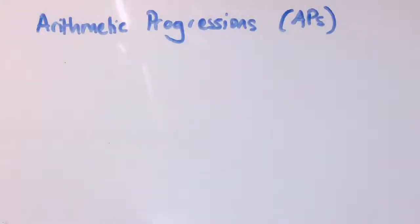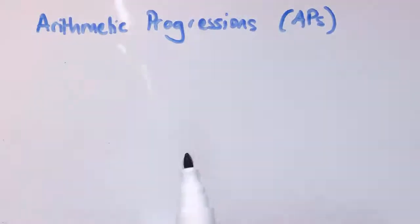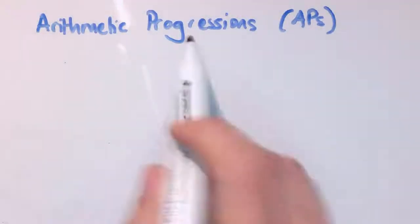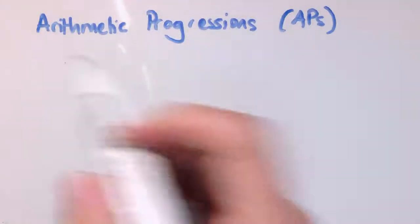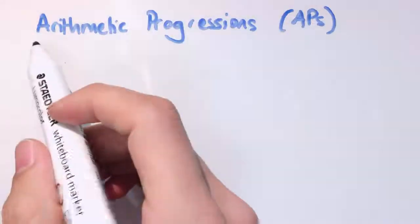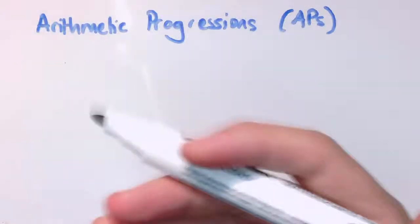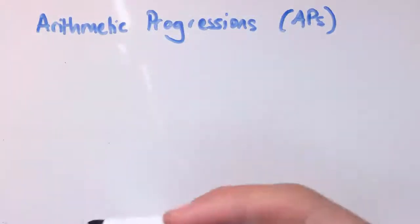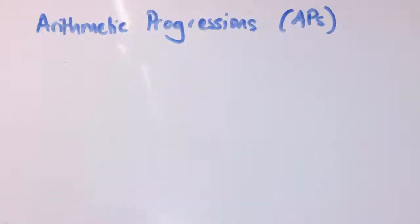In this video we're going to talk about arithmetic progressions, sometimes shortened to APs. A progression really is just a sequence, and arithmetic means that it's additive — i.e. that we're just either adding or subtracting a number to go from one term to the next.